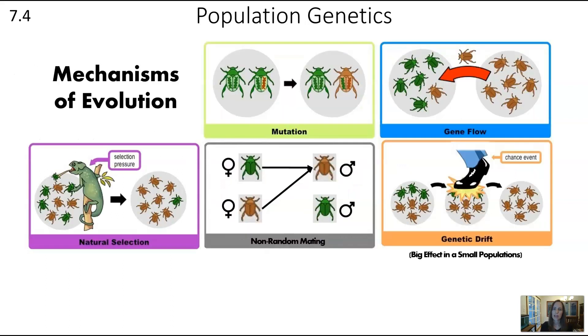The mechanisms of evolution are mutation, gene flow, natural selection, non-random mating, and genetic drift. We're going to talk about each of these other than natural selection in this video.